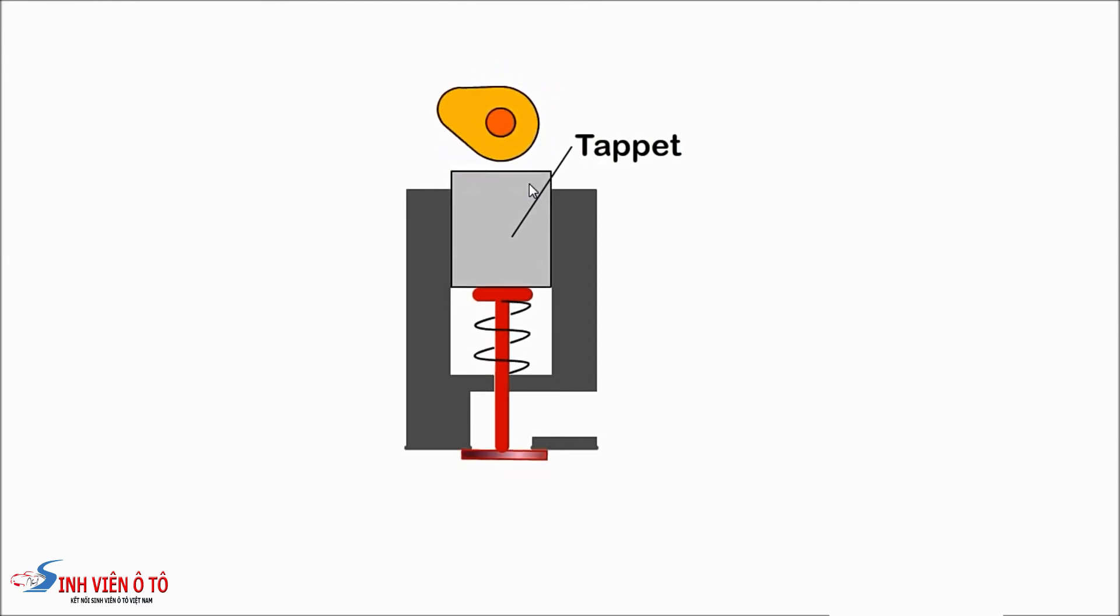To allow for expansion as the engine heats up, it is necessary to have a small gas gap between the tappet and cam to ensure the valve is fully closed. Note the area around the exhaust valve is the hottest part of the engine.